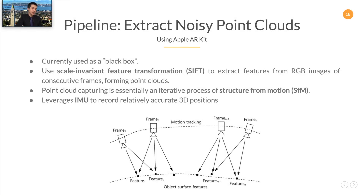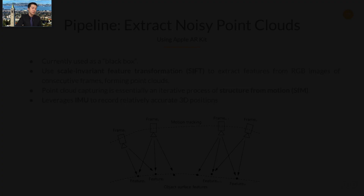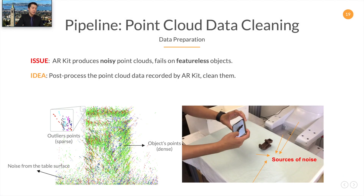Next, ARKit will extract point clouds from each image in a sequence and stitch them together, forming a full 3D representation of the object. Currently, we are using ARKit as a black box, since it is fully optimized for iPhones, but we cannot directly tweak the algorithm to obtain higher quality point cloud data. Under the hood, ARKit uses structure from motion and SIFT to capture the point clouds. The dimensions of the object are approximated by hardware called IMU. However, the point cloud data recorded by ARKit is very noisy, because it tends to capture noise from the table surface and the walls. ARKit also fails to capture data from featureless objects, such as monochromatic, small, or reflective objects.